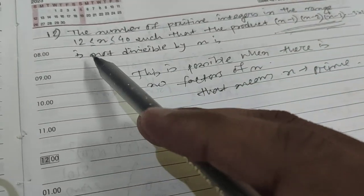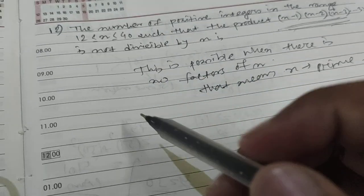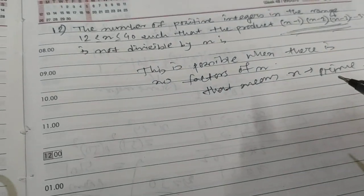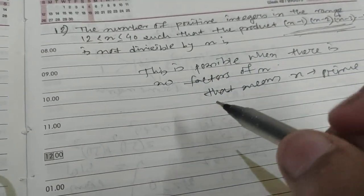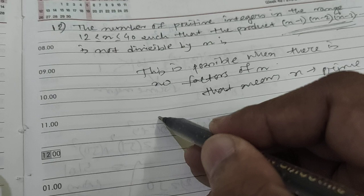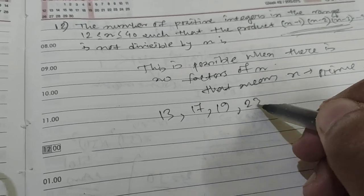So we need to search in this range, between 12 and 40, which prime numbers are present. The first prime number is 13, then 17, then 19, then 23,